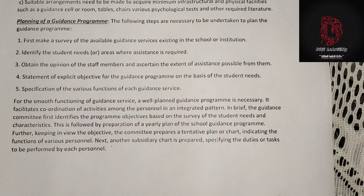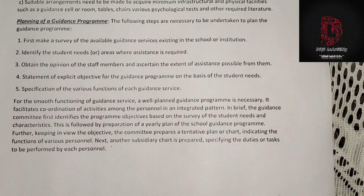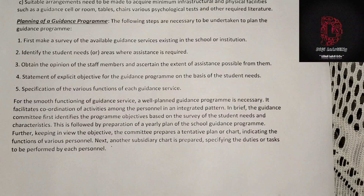Fifth is the specification of the various functions of each guidance service. For the smooth functioning of guidance service, a well-planned guidance program is necessary. It facilitates coordination of activities among personnel in an integrated pattern. The guidance committee first identifies the program objectives based on a survey of student needs and characteristics. This is followed by preparation of a yearly plan of the school guidance program. Keeping the objectives in view, the committee prepares a tentative plan indicating the functions of various personnel, and another subsidiary chart specifying the duties or tasks to be performed by each personnel.